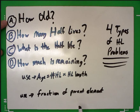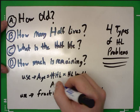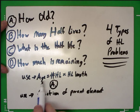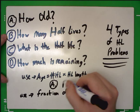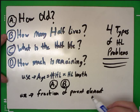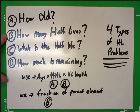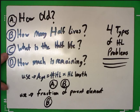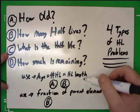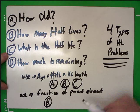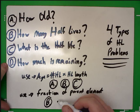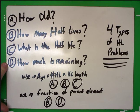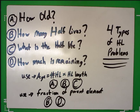For A — how old is something — you'll use the age equation. You'll get the number of half-lives and the half-life length and plug them in. For B — how many half-lives have passed — if you have the age and half-life length, use the equation; you can also use the fraction of parent element remaining. For C — what is the half-life length — you can only use that equation. For D — how much is remaining after a certain number of half-lives — you will need to use the fraction of the parent element that's left.